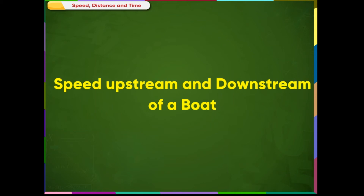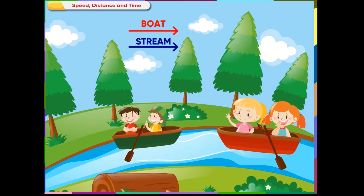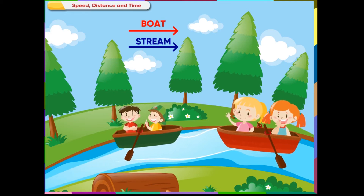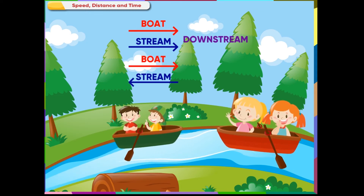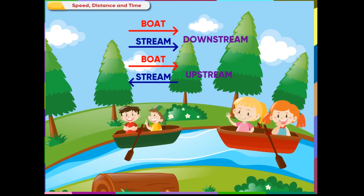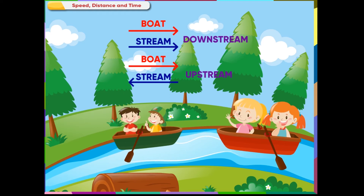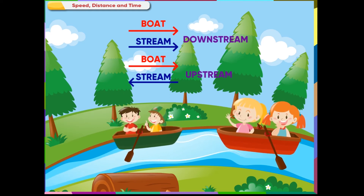Speed upstream and downstream of a boat. In a river, water flows at a certain speed. The direction of the water along the stream is called downstream, and the direction against the stream is called upstream. Moving upstream means moving against the flow of the current. Moving downstream means moving with the flow of the current.